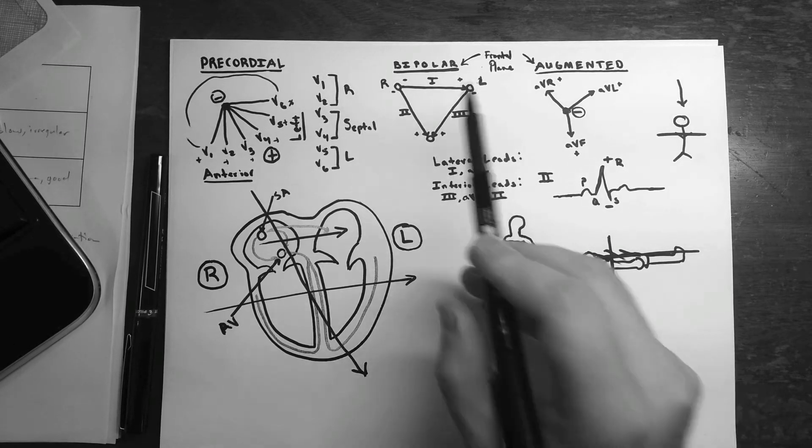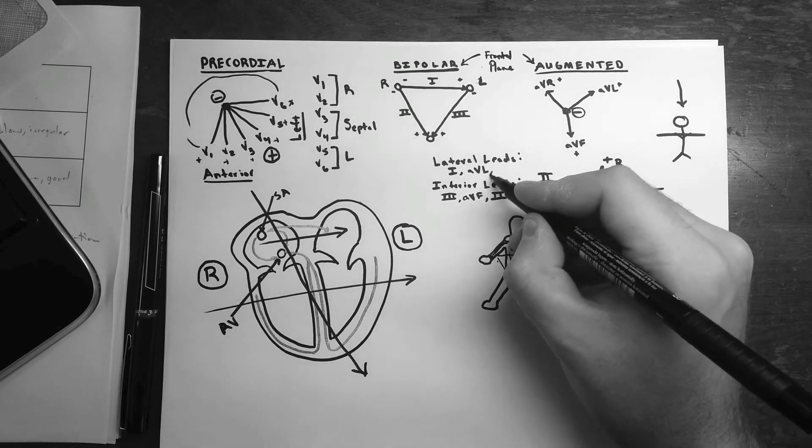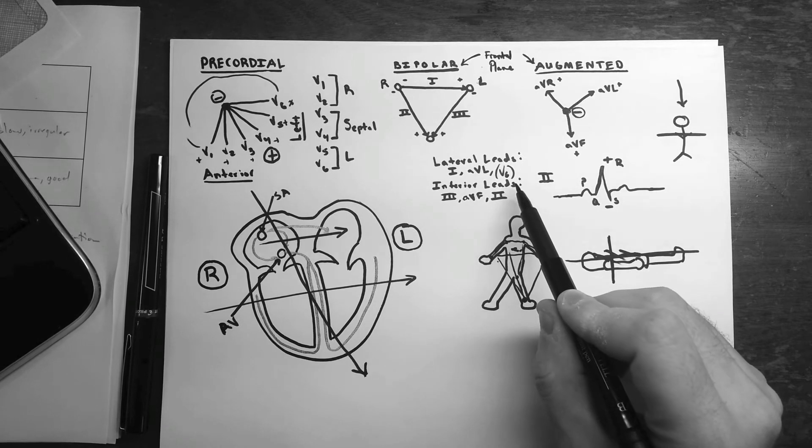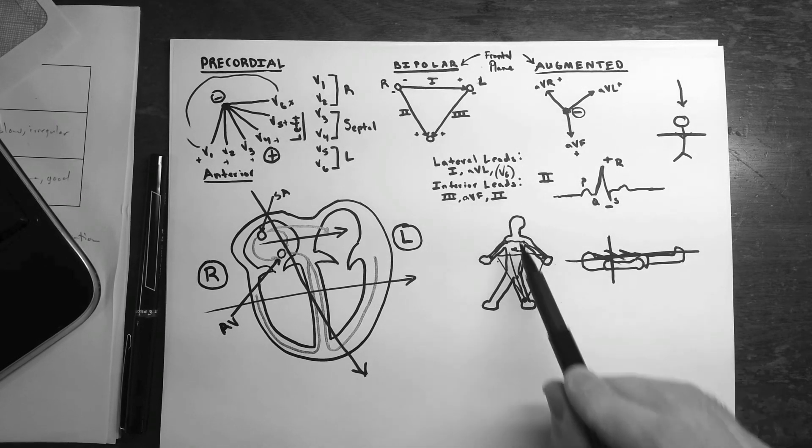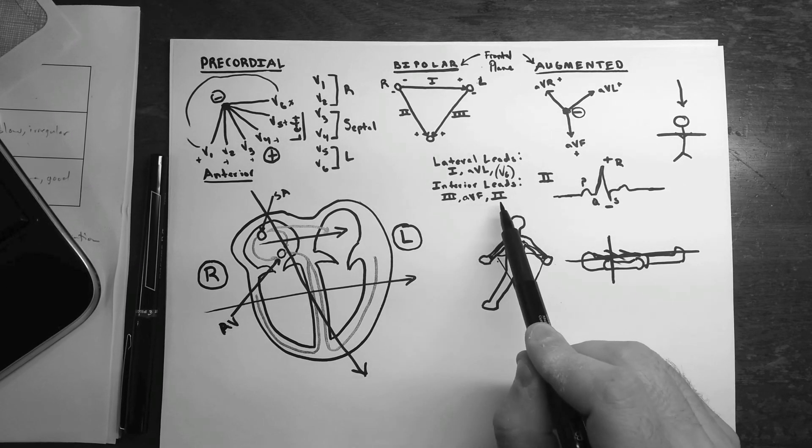The lateral leads being lead one, going this way. AVL, kind of going this way. And then to a certain extent V6. And inferior leads, if you ever hear that term, are the ones pointing downward. So anything going downward is positive in lead 3, AVF, and 2.